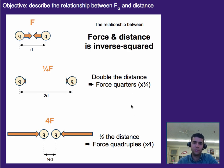And the force and distance is an inverse squared relationship, meaning if you have two charges and you double their distance, the force is now one fourth of what it originally was. And if you have two charges and you half their distance, the force is now four times what it originally was.